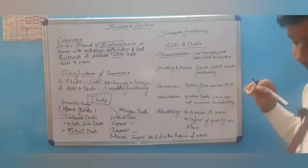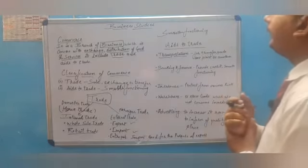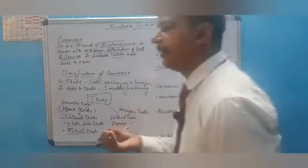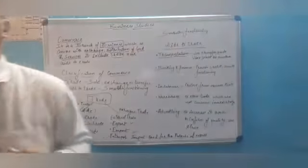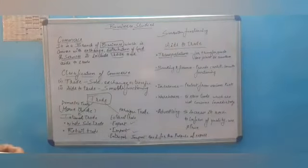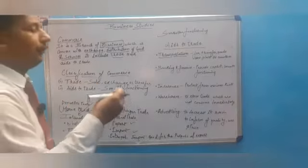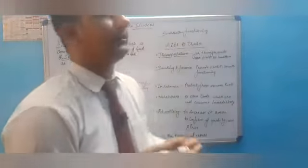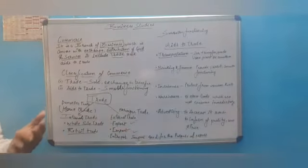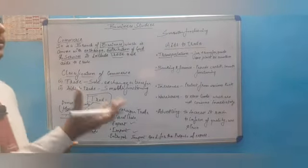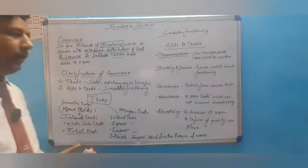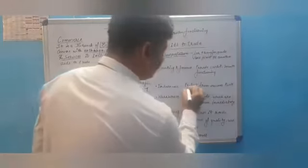Insurance is also a part of aids to trade. It protects goods from various damages or wear and tear that may happen while transferring goods from one place to another — whether fire insurance, water insurance, or any other damages during transport.